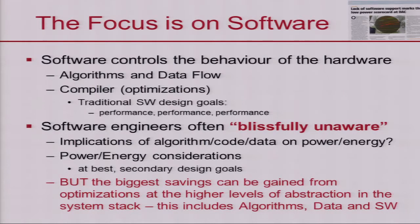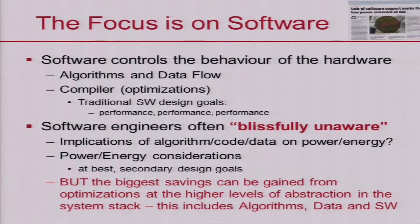It is algorithms and data flow, the compiler, the optimizations. But the traditional software design goal is performance, performance, performance. Software engineers are blissfully unaware of the implications of algorithms, data, and encoding on power and energy. And if you're lucky, power and energy considerations are a secondary design goal. The fact is, the biggest savings can be gained by optimizations at the higher levels of abstraction.